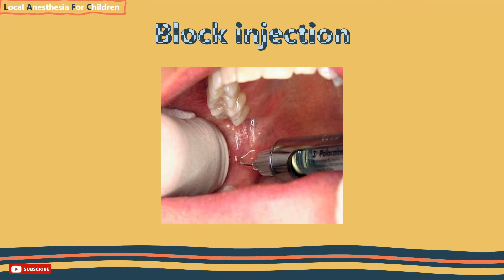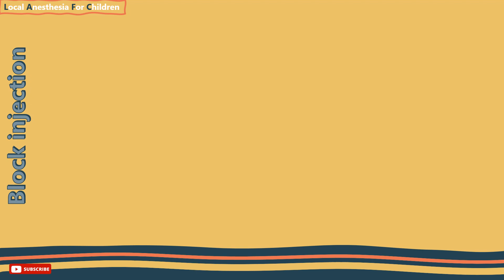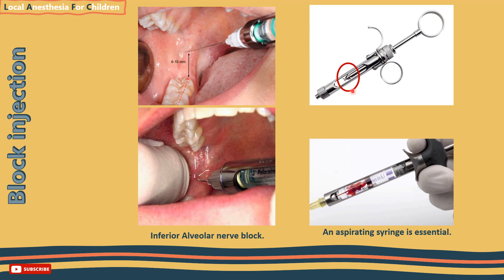Nerve block injection: in this technique we aim towards the nerve trunk. For the inferior alveolar nerve block using thumb and forefinger, penetrate about 1 cm into lingual tissues from the internal oblique ridge, midway between the upper and lower occlusal planes in adults, and at about the same level as the occlusal plane in children, as the mandibular foramen is lower on the ramus. Note that an aspirating syringe is essential to avoid injecting into a blood vessel, which would lead to failure of anaesthesia and toxicity.